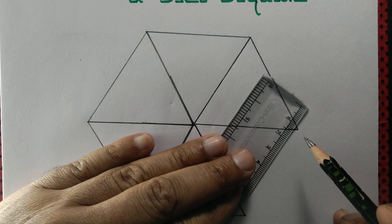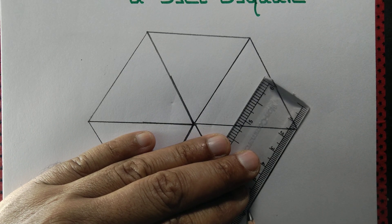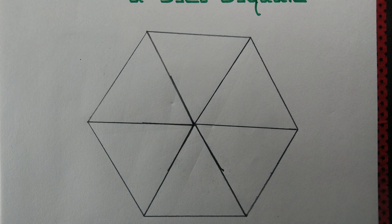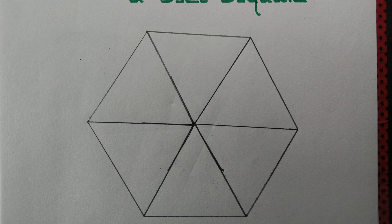Five sides and then the sixth side. So we have drawn a regular hexagon just using a set square.